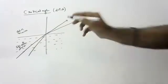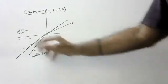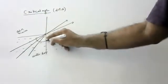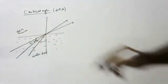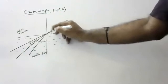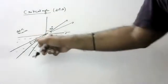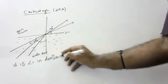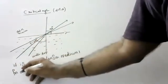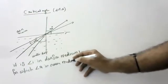If I still increase the angle of incidence, it will move still further away. If I increase the angle of incidence further, at one particular angle — called critical angle — the light ray refracts. Critical angle is the angle of incidence in denser medium for which the angle of refraction in the rare medium is 90 degrees.